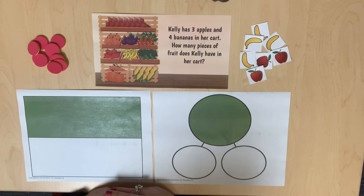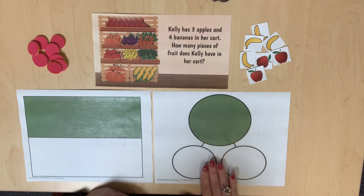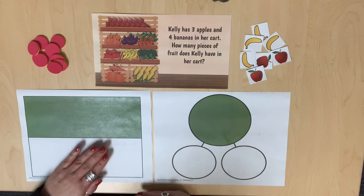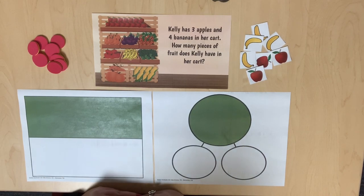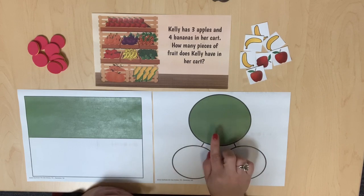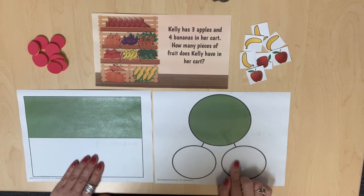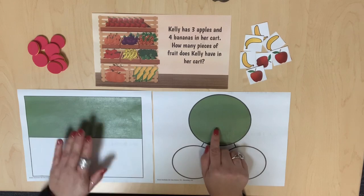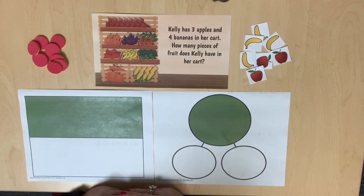As students work through the solve problem solving process with part-part-whole word problems, present both the number bond work mat and the part-part-whole work mat and ask students what they notice. They may notice both have white areas for the parts and a shaded or green area for the whole. Both can be used to represent and solve word problems.